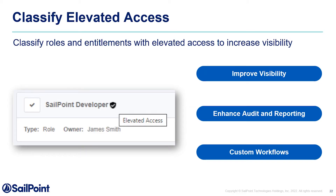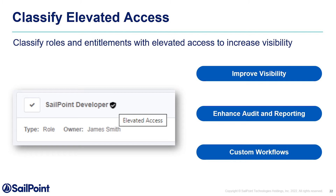Next, we will discuss Elevated Access. This feature will allow you to classify a role or entitlement as Elevated Access. By classifying an item as Elevated Access, it provides clear visibility when requesting, certifying, or approving the role or entitlement, ensuring these items will be treated with greater care. In large certifications, the badge icon will stick out and ensure the approver understands that it contains Elevated Access. The Elevated Access attribute will be included in reports, which can help with audits or to identify high-risk areas. Finally, the Elevated Access property allows you to create your own workflows around them — for example, the process for acquiring Elevated Access may need more or different approvals while provisioning.